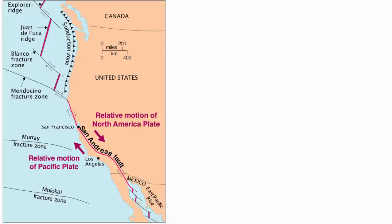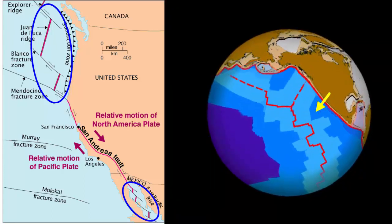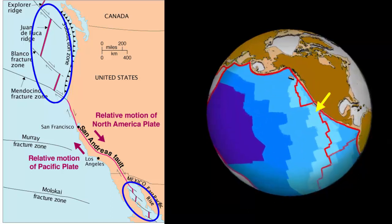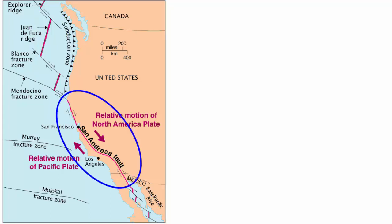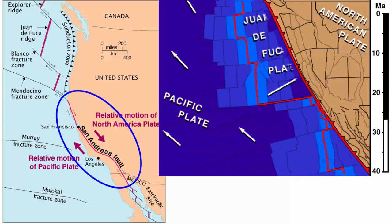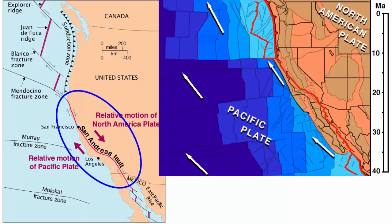Let's move back to California. There's a divergent spreading center off of Washington, Oregon, and Northern California, and one that runs up the Sea of Cortez, or Gulf of California. Notice that it's offset with transform boundaries north and south. The North American continent is moving over the Pacific Ocean and causing the eastern edge of that ocean to subduct, including the subduction of a seafloor spreading center. The zone between the two active spreading centers is just one big transform boundary — the San Andreas fault system.